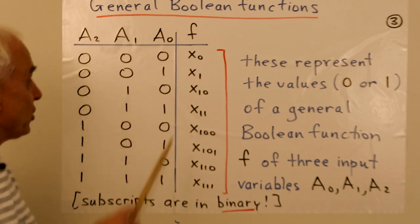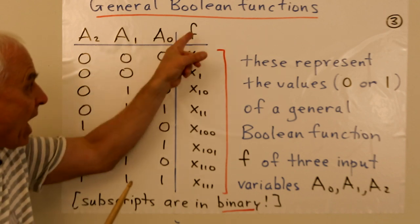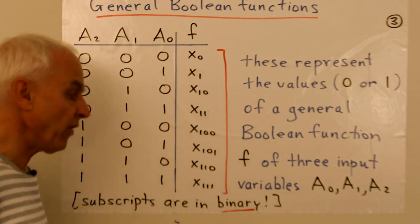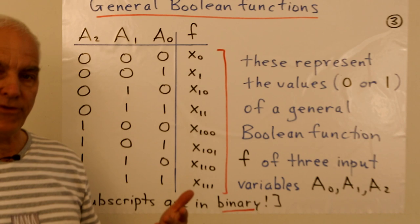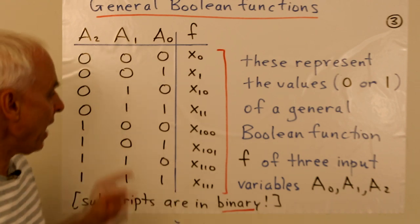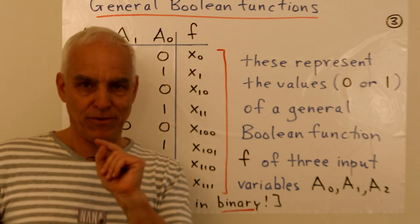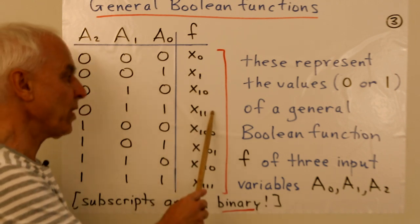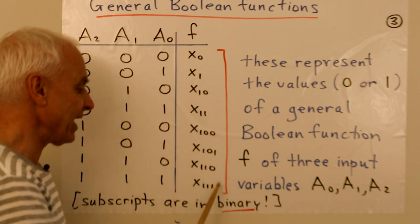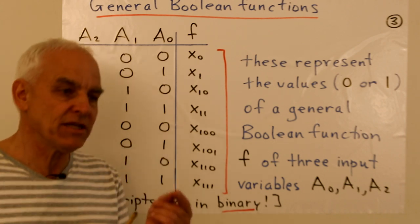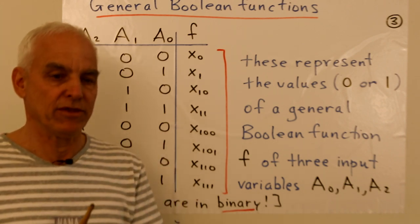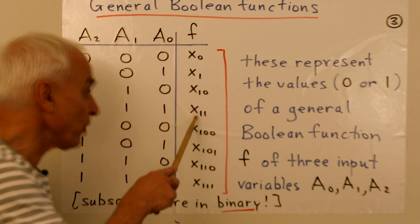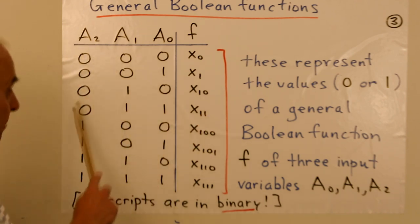So let's stick with the three variable situation, A0, A1, A2. Here are the eight possibilities as usual. And now we're considering a Boolean function in a general fashion. So instead of having specific zeros and ones here, we just have these variables which represent these unknown values. And look carefully at how I've labeled these variables. This one is x0, this one's x1, this one's x2, x3, x4, x5, x6, x7, where I'm using the binary representations of those numbers, not the familiar Hindu-Arabic representations.